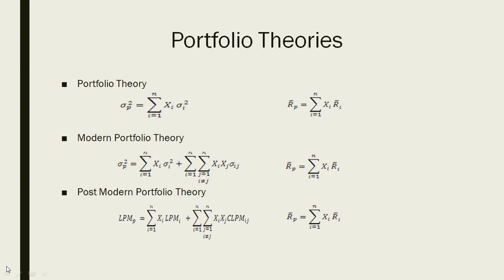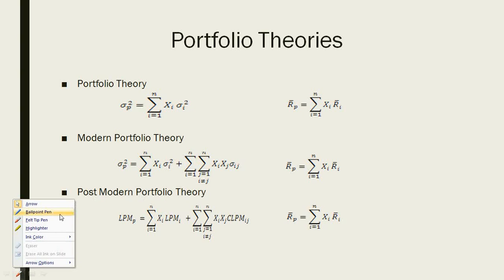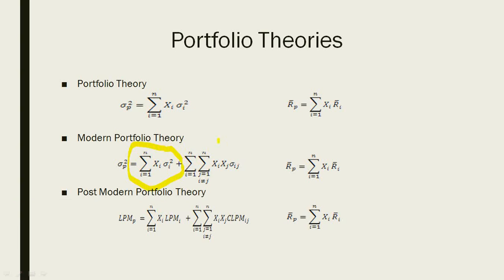He defined portfolio risk as the weighted risk of individual securities — represented on the left-hand side of the equation — plus the weighted covariance between them, combining them into total risk. The return, however, was still defined the same way as in the portfolio theory era. From 1950 onwards, this era became known as modern portfolio theory.